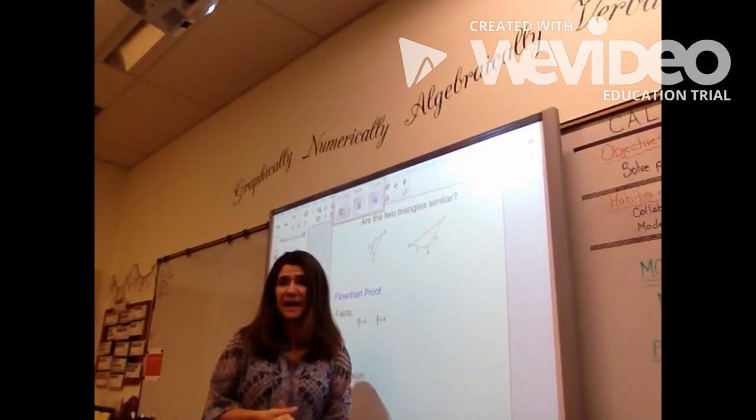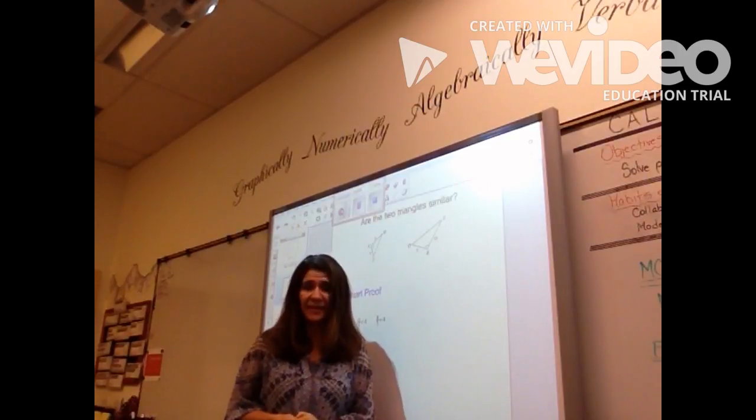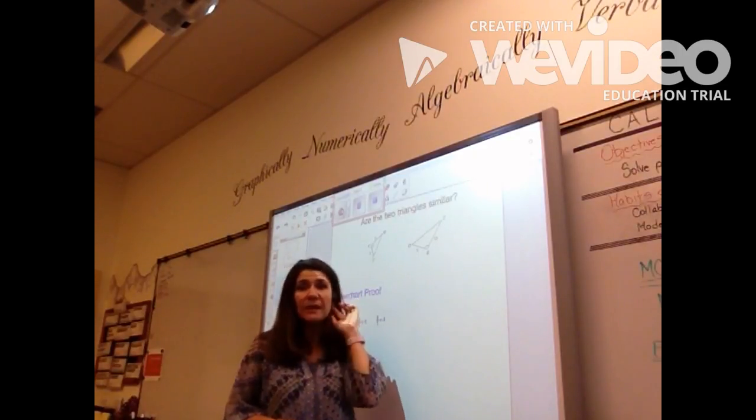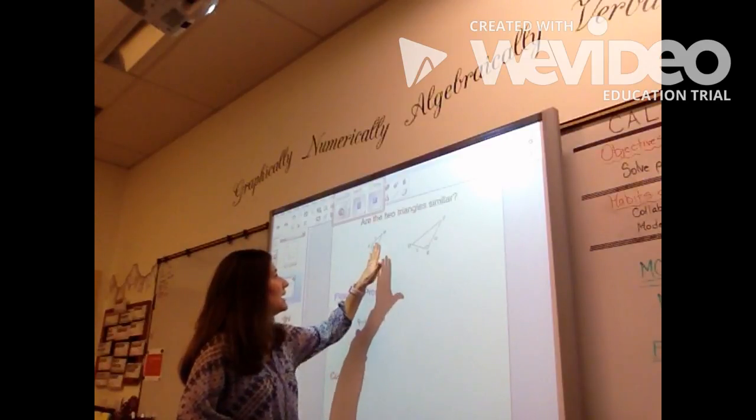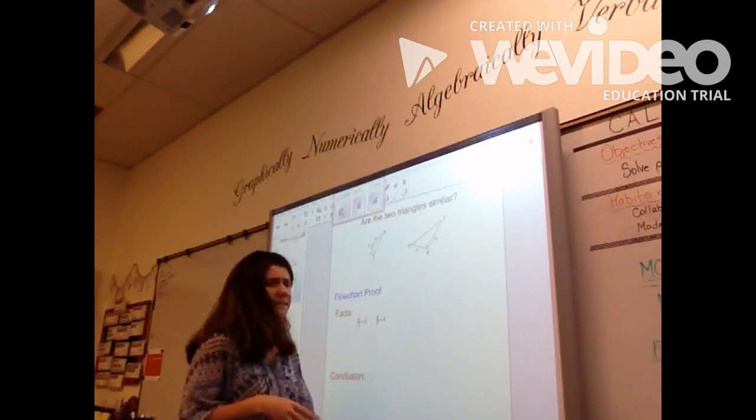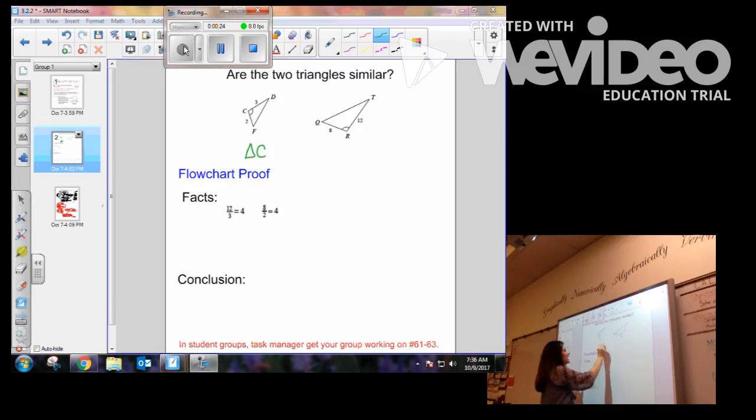Now that you have looked at problem 59 to kind of get you warmed up, we are going to do an example together of a flowchart proof. So we are given two triangles. Let's label the triangles so that we have the corresponding sides and angles. We'll go CDF.